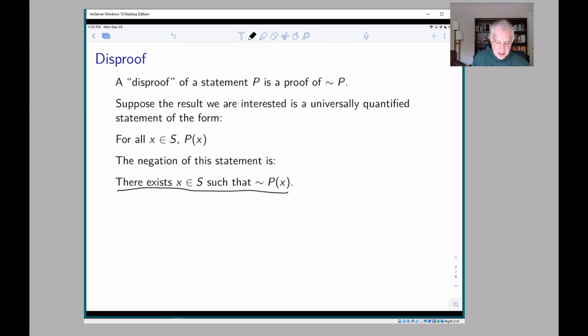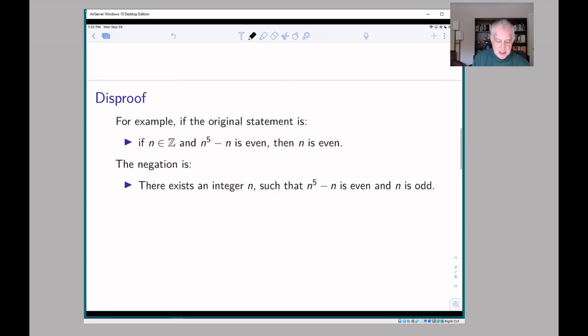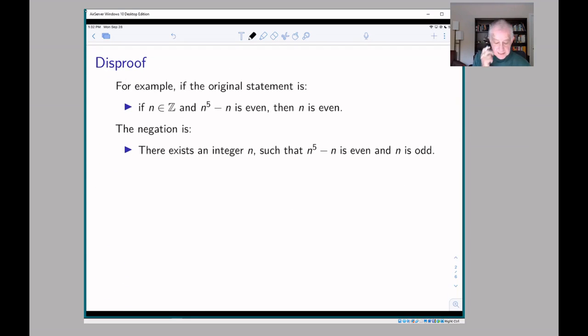Here's a very simple example. Suppose the original statement is: if n is an integer and n to the fifth minus n is even, then n is even. Remember that a lot of these if statements have an implicit for all quantifier, so this statement really says for all n in Z, if n to the fifth minus n is even, then n is even.